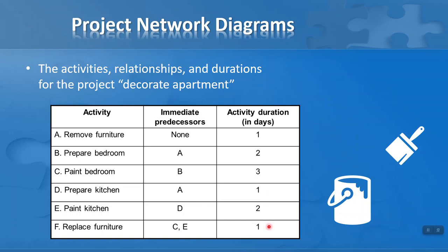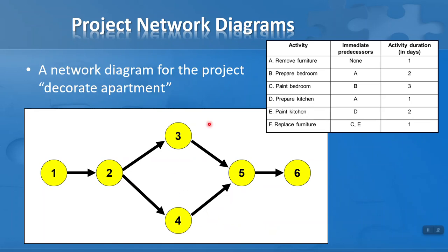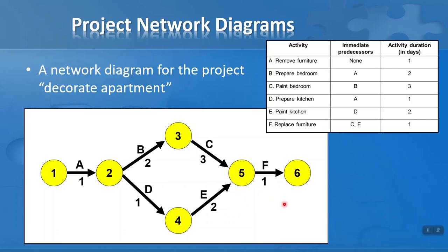Now let's plot this on a project network diagram. The network diagram for the decorate apartment project has six activities represented by six arrows. Using the immediate predecessors, I can see one path: activity A, followed by B, followed by C, followed by F. Another path is activity A, followed by D, followed by E, followed by F. I add in the activity names and durations: remove furniture is one day, prepare bedroom two days, paint bedroom three days, and so on.